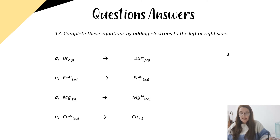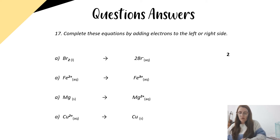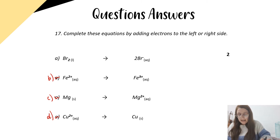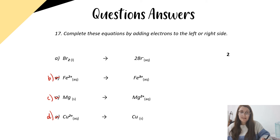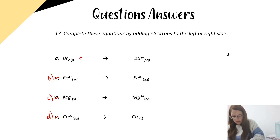Question 17 says: complete these equations by adding electrons to the left or right-hand side. We have to decide if these are being oxidised or reduced first, then add the electrons in. For A, bromine — Br₂ diatomic — going to bromine negative ions. Those bromine atoms are gaining electrons to become bromine ions, so we add two electrons on the left. That is reduction.